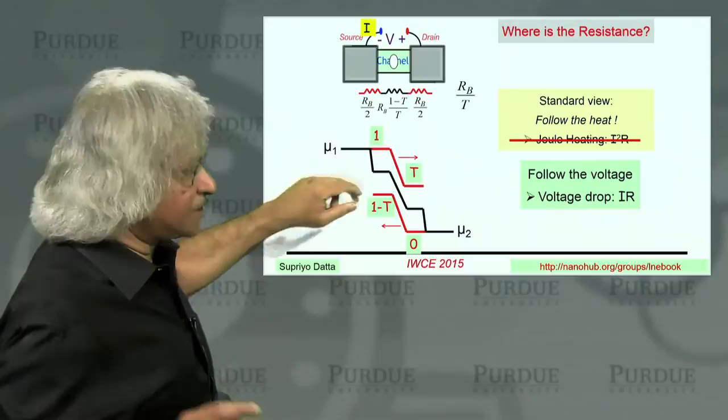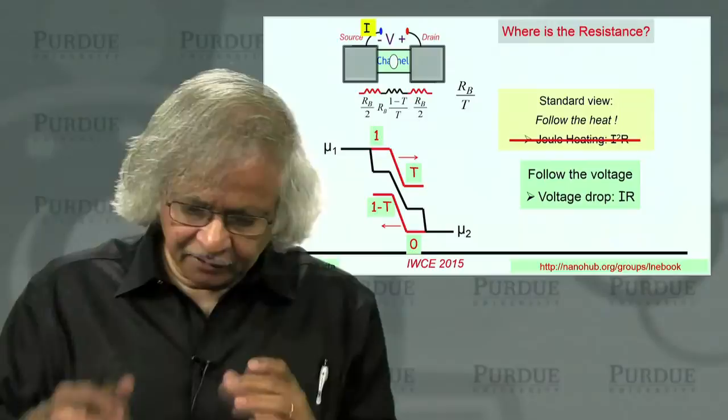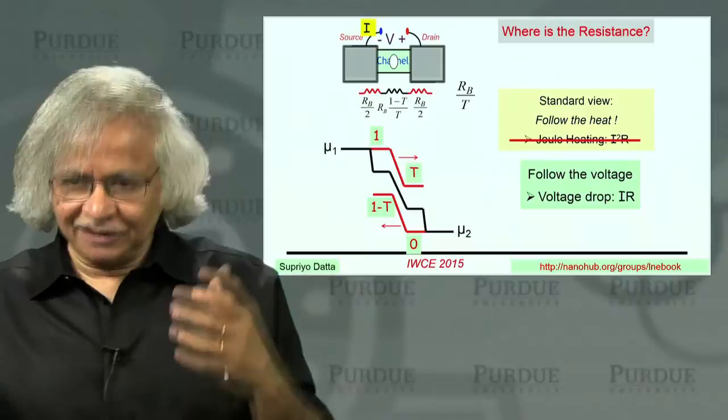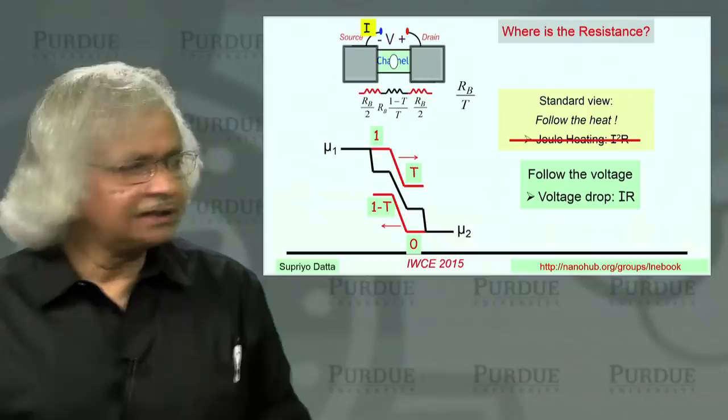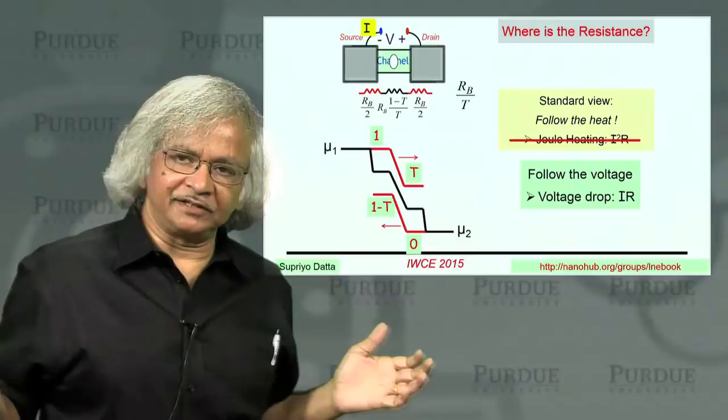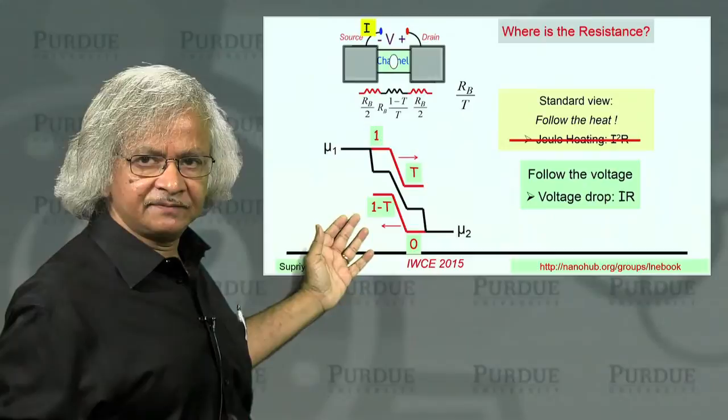But it does not mean, of course, that the heat is dissipated here. Because the way you should think is, whenever you have a barrier like this, it tends to heat up the carriers. In the sense, the electrons have a very non-equilibrium distribution. And those hot electrons, once they flow away from this region, they get rid of that heat. But where that happens, of course, depends on many other details.